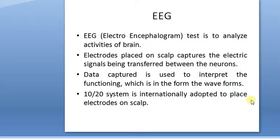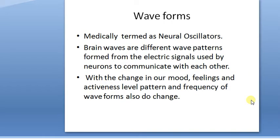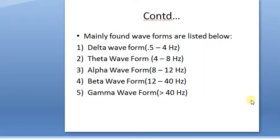Now the waveforms, which are medically termed as neural oscillators. These waveforms are of different wave patterns formed from the electric signals used by neurons to communicate with each other. With the change in our mood, during anger, anxiety, sleep, or anything we are doing, these waveforms actually change.